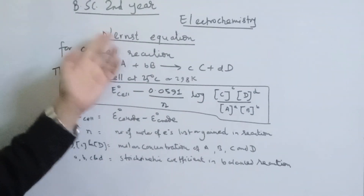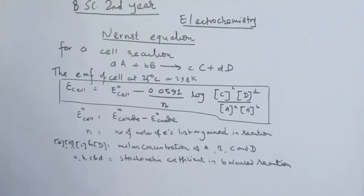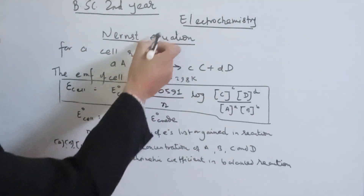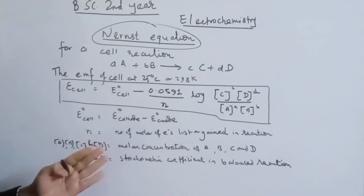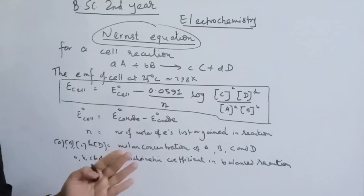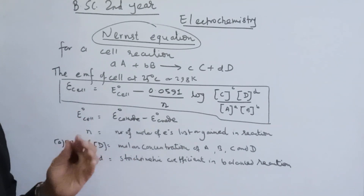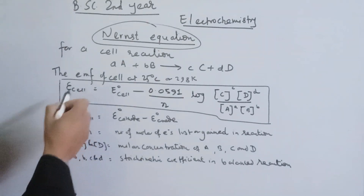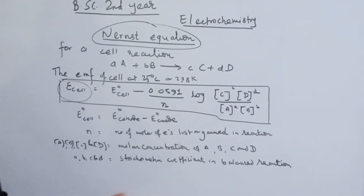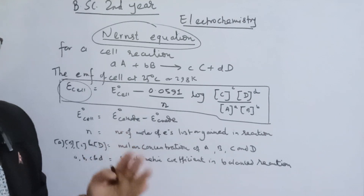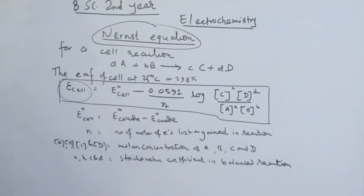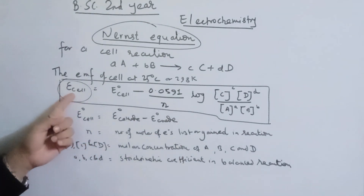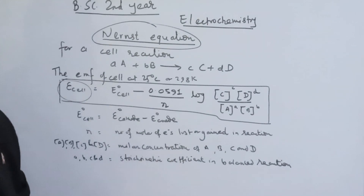Today I will explain the electrochemistry of the Nernst equation. One of the topics is: what is the Nernst equation? What is the EMF of a cell? When we make a galvanic cell, we will calculate the EMF — how does the EMF of the cell depend on the concentration?